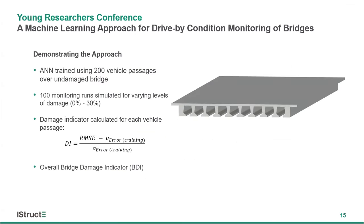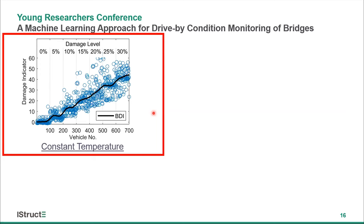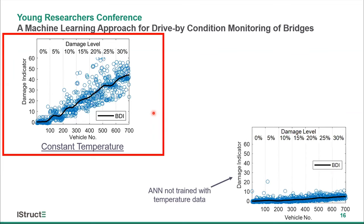To demonstrate the approach, the model was trained using 200 simulated vehicle passages over an undamaged bridge, then subsequent sets of 100 passages were simulated with increasing levels of mid-span cracking. Each blue dot represents an individual vehicle passage and the black line represents the overall bridge damage indicator. In the first 100 passages the bridge isn't damaged and the indicator is close to zero, but as soon as cracking is induced it increases, showing a very distinct change. However, when temperature effects are modelled but the machine learning algorithm isn't trained to recognise them, the results are much worse — temperature masks the impacts of the damage.